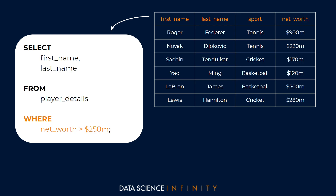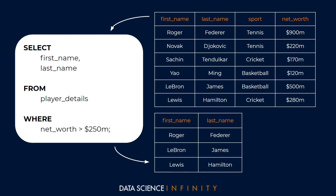After FROM, we have the WHERE statement, where we apply row-level filters. The only requirement in our example is that net worth must be greater than $250 million. Reading the full query from the top: please return data from the first name and last name columns found in the player details table, but only return rows where net worth is greater than 250 million. After adding a semicolon to signal the end of the request, we hit run and get our shortlist of potential Rolex spokespeople.